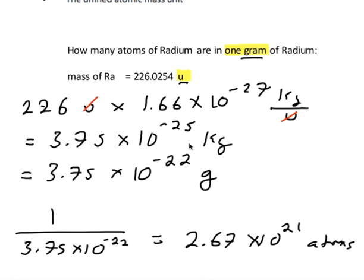Each atom weighs 3.75 times 10 to the negative 22. And if we divide that number into one whole gram, we get the number of atoms.